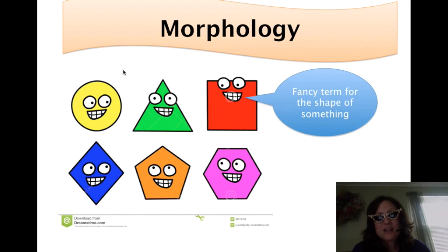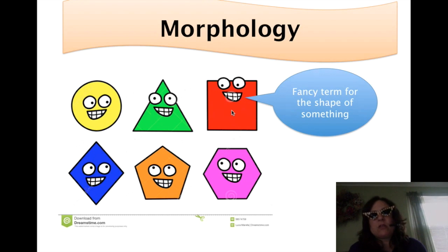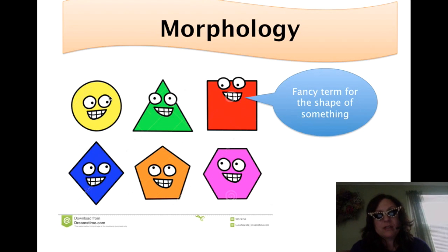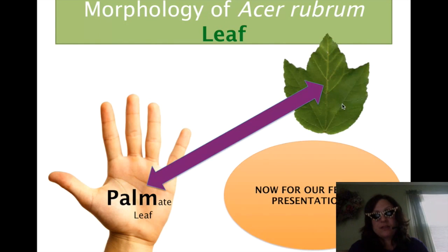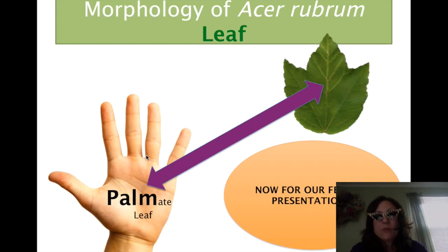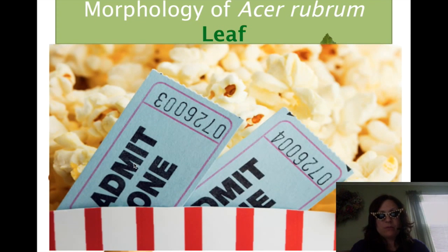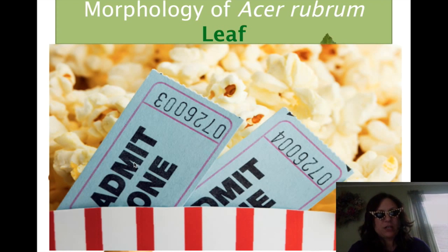On to morphology. I know it's a big word, but check this out — it's not so hard. See this circle, this triangle, this square? Morphology is just naming shapes: circle, triangle, square, and so forth. We have a leaf — this is a red maple leaf — and its shape is called palmate. I use the hand so you can remember 'palm' — palmate. Kind of corny, I get it, but it works.